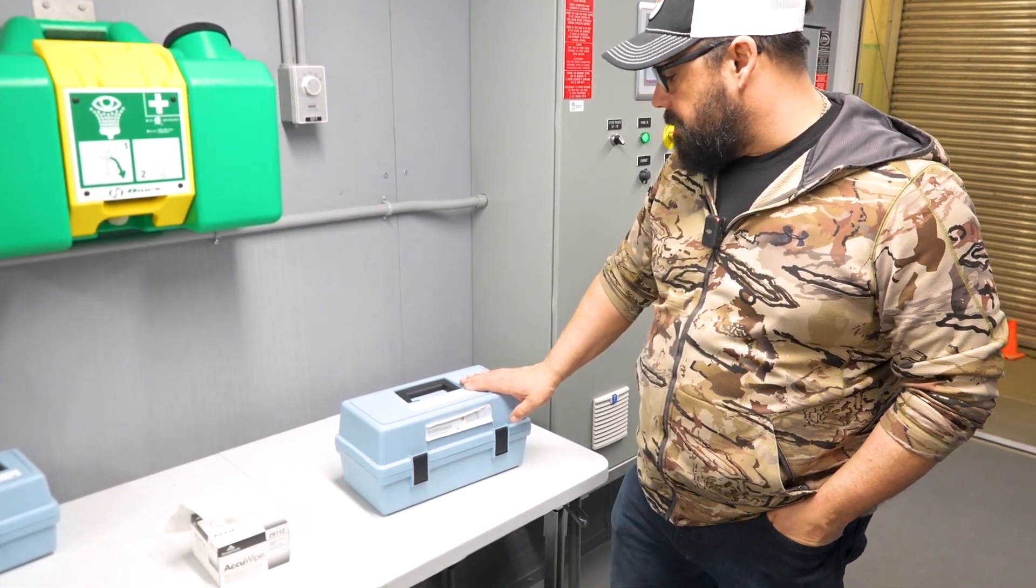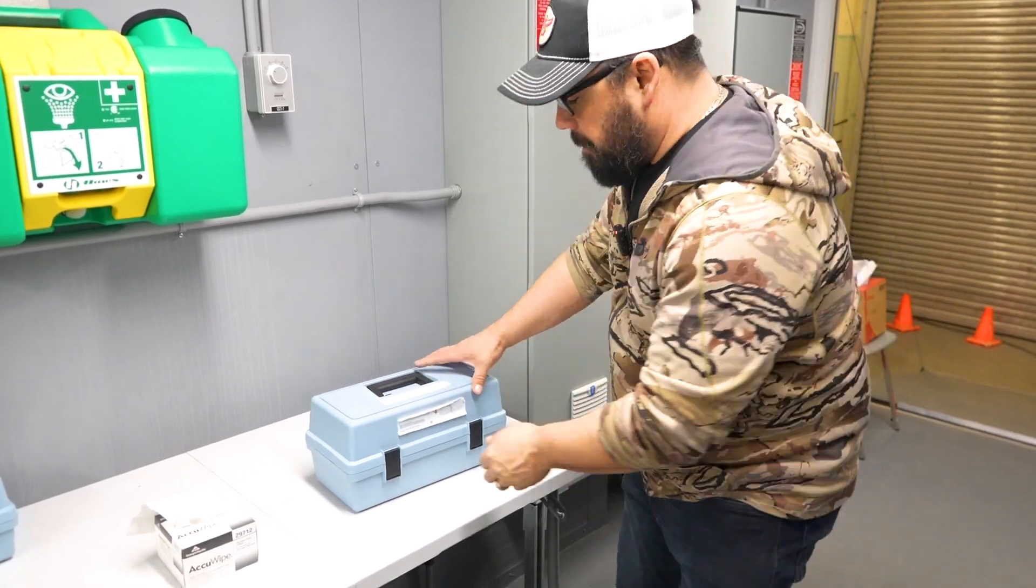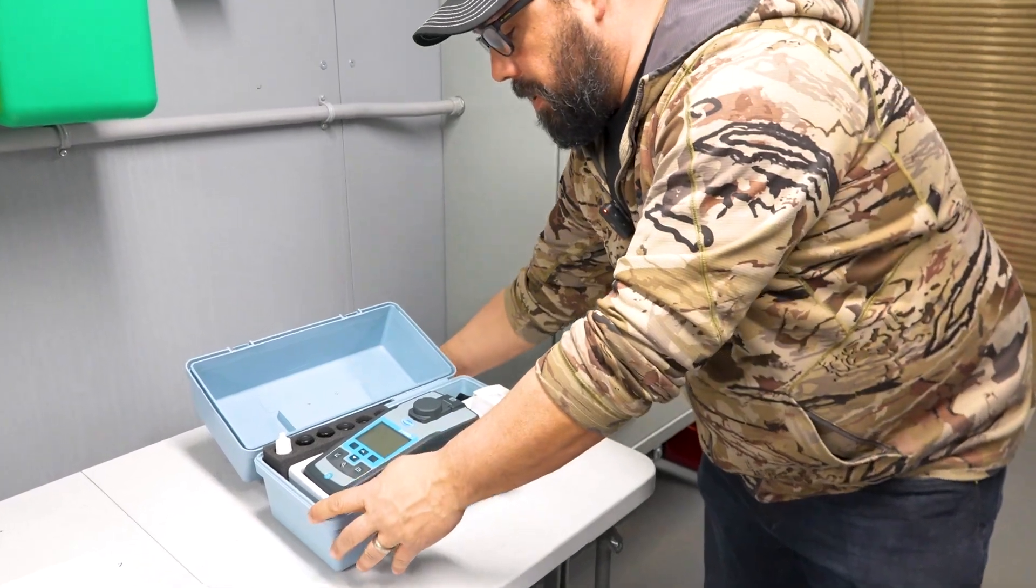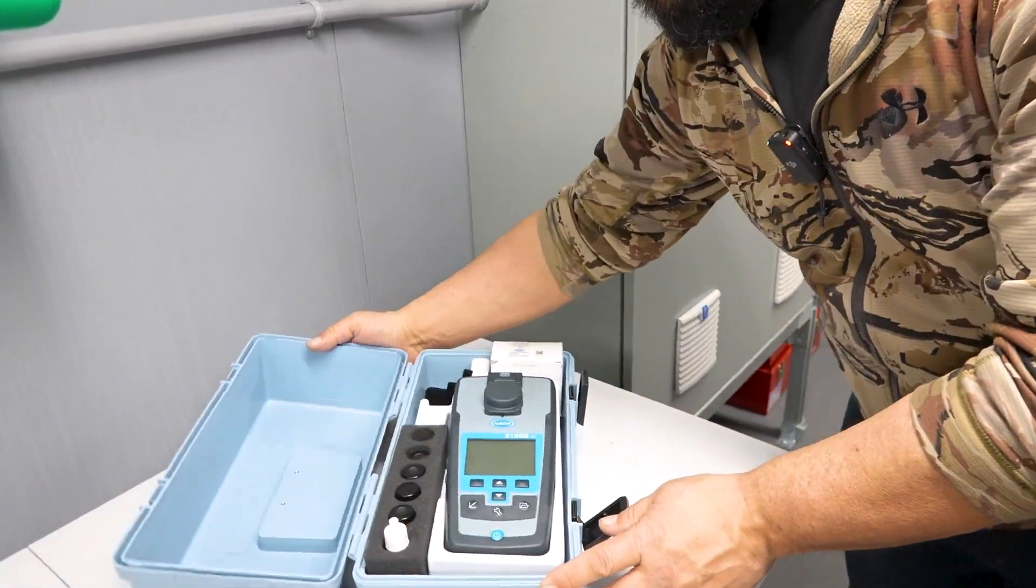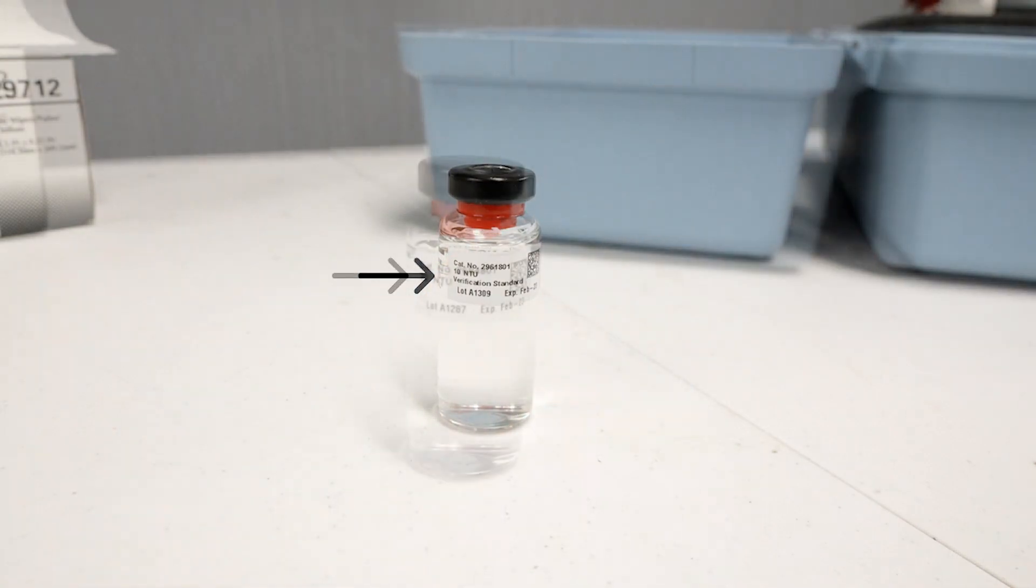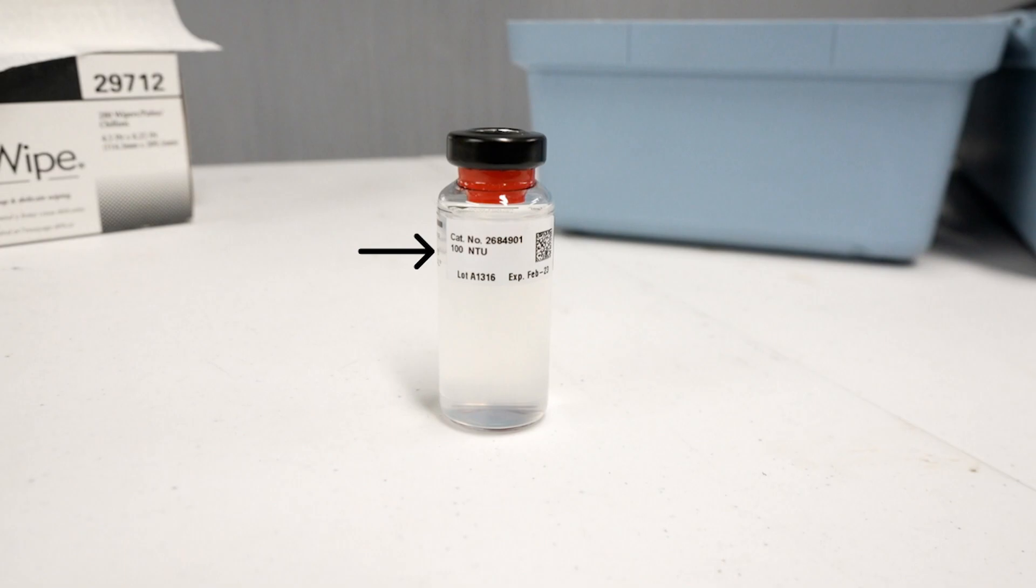We're going to discuss the calibration of the 2100Q Portable Turbidity Meter from HACC. First we've got to open the box up, and we have our turbidity meter in here. Now this turbidity meter has standards as well. We'll have a 10 NTU, we have a 20 NTU, a 100 NTU reading, and an 800 NTU reading.